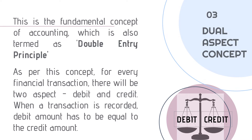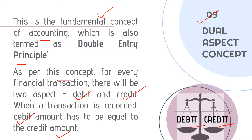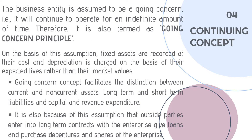Another concept is the dual aspect concept, also known as the double entry principle. According to this concept, every transaction has two aspects: debit and credit. Next, the continuing concept, also known as the going concern principle, states that a business entity has been established for an indefinite amount of time.